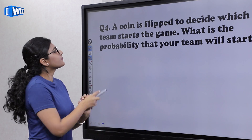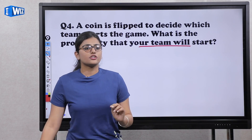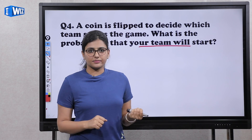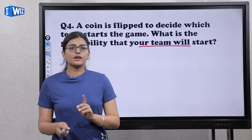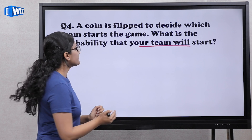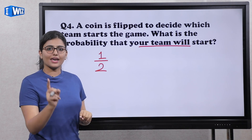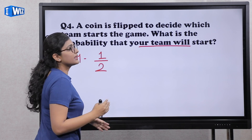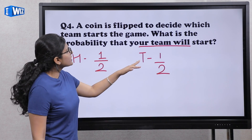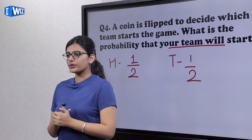A coin is flipped to decide which team starts the game. If you toss a coin, either heads or tails will come. Suppose you choose heads — the probability of heads is 1 by 2, because the total outcomes are 2 (heads or tails) and you need one of them. Similarly, if you choose tails, the probability is also 1 by 2. So your chances of starting the game in either case is half.